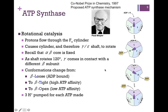As that gamma shaft makes one full rotation in the F1 domain, it contacts each of the three beta subunits, and each one in turn will make ATP. So one full rotation produces three ATP molecules. It takes about three protons to be pumped for each ATP that's made.